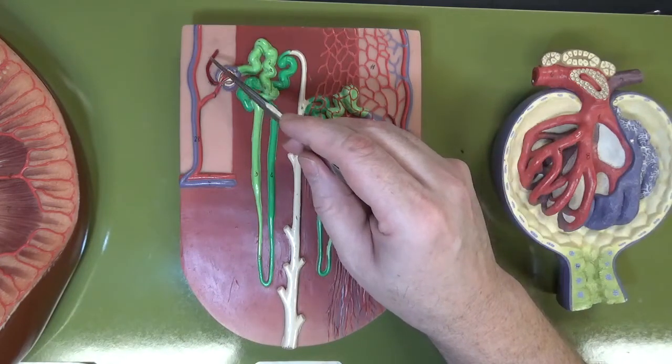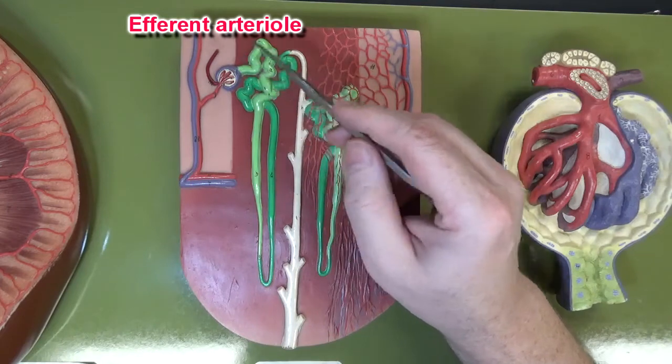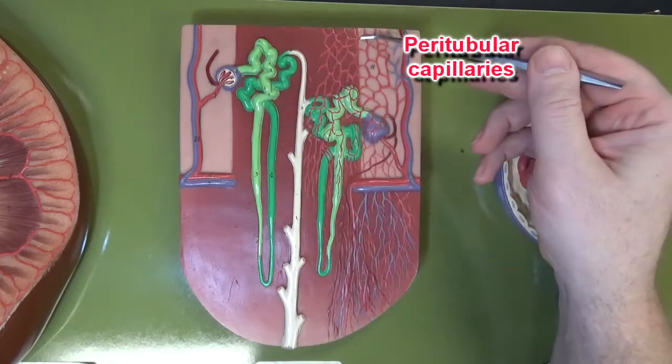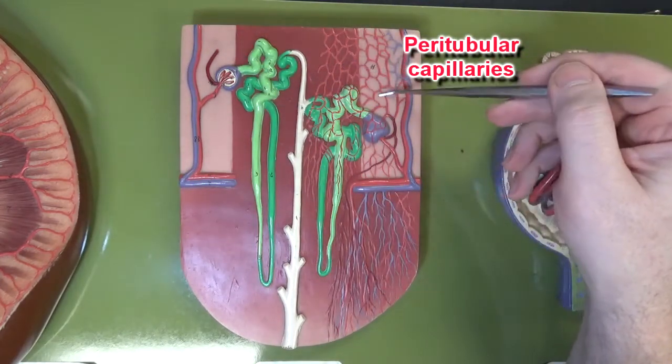This blood vessel right here is an efferent arteriole, and this would lead to peritubular capillaries. Here we can see some peritubular capillaries over here.